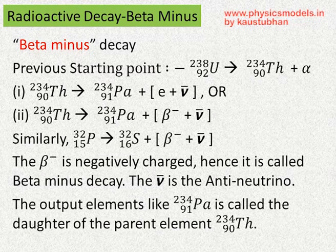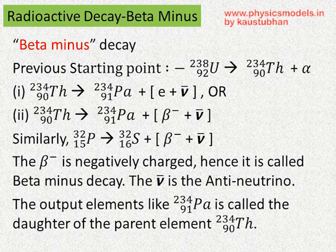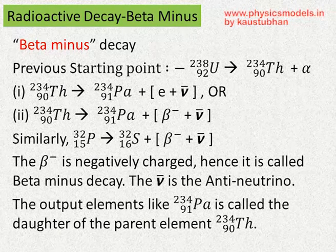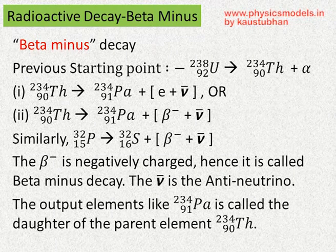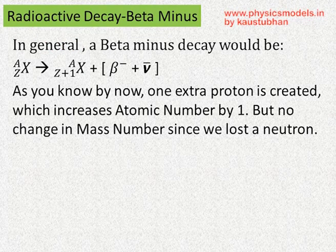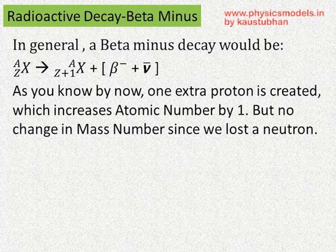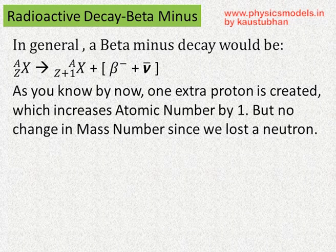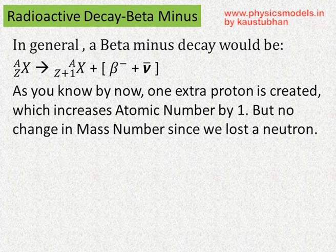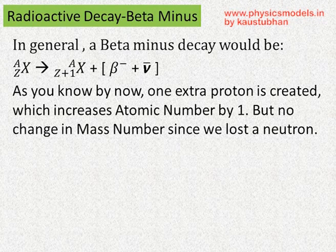Now the question is, is protactinium-234-91 stable? That's also not stable, because if you do 234 minus 91, you'll end up with a large number of neutrons compared to the number of protons. Therefore, this also must undergo a decay, and that will become uranium-234-92. In general, a beta-minus decay can be written as X-A-Z becomes X-A-(Z+1) plus beta-minus plus anti-neutrino. The Z+1 is explained by the fact that the number of protons increases by 1, but the overall mass number A does not change because a neutron was reduced and became a proton: proton +1, neutron -1, therefore A remains the same.